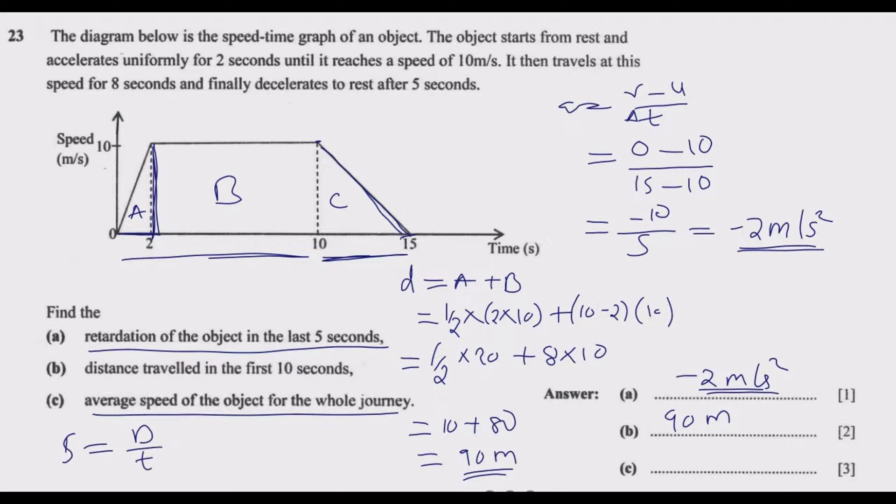The total distance equals area under A plus area under B plus area under C. Area under A and B equals 90, plus C. We can find C by doing the same thing we did with area A. Area under C is half multiplied by 15 minus 10, multiplied by 10 which is 10 minus 0, the height.